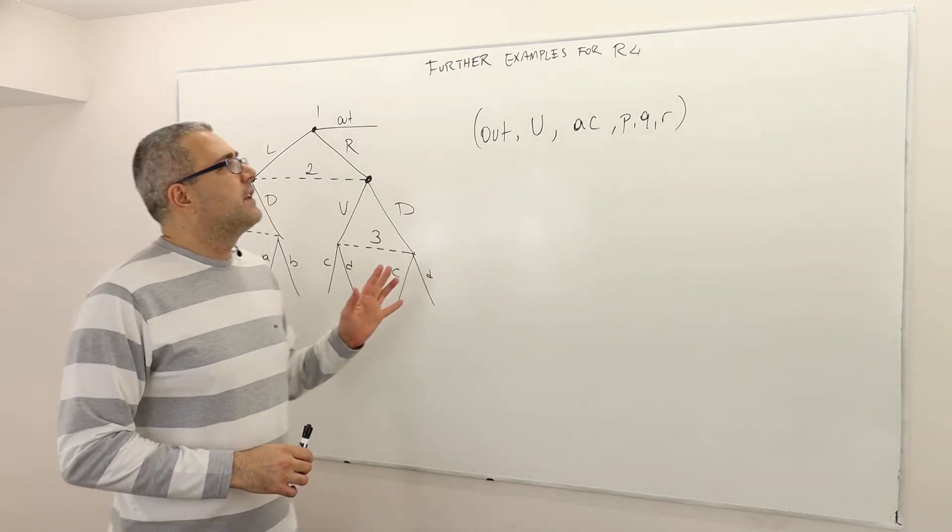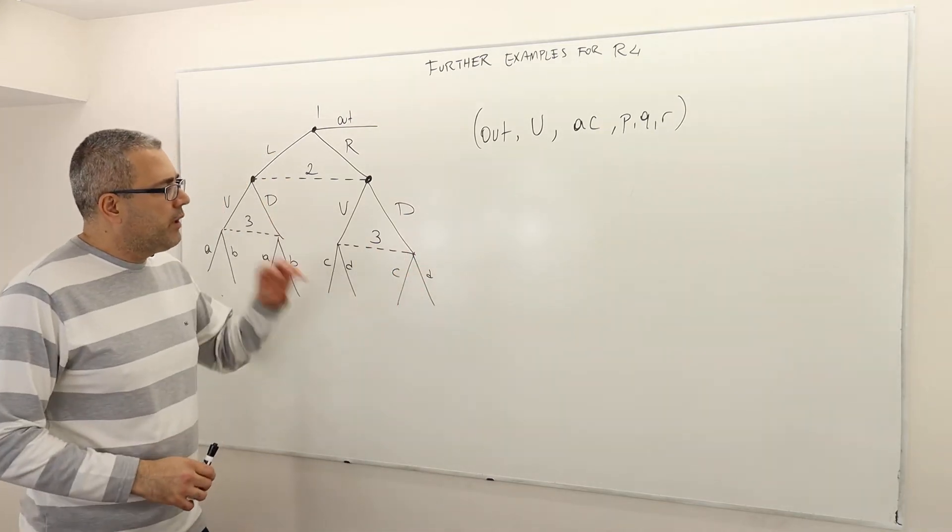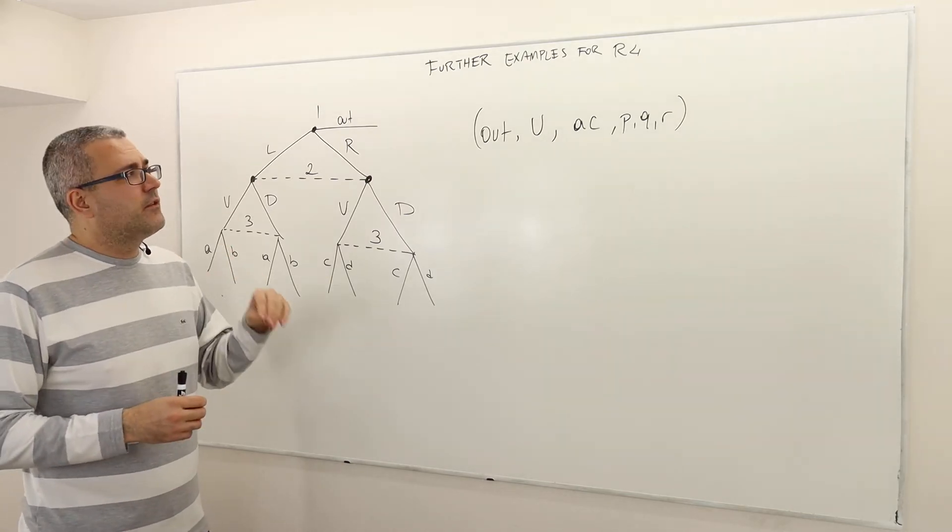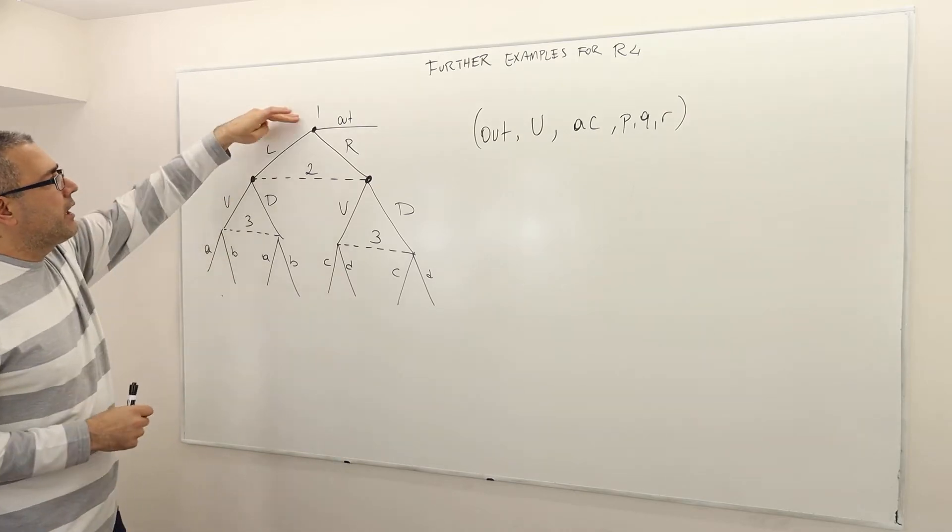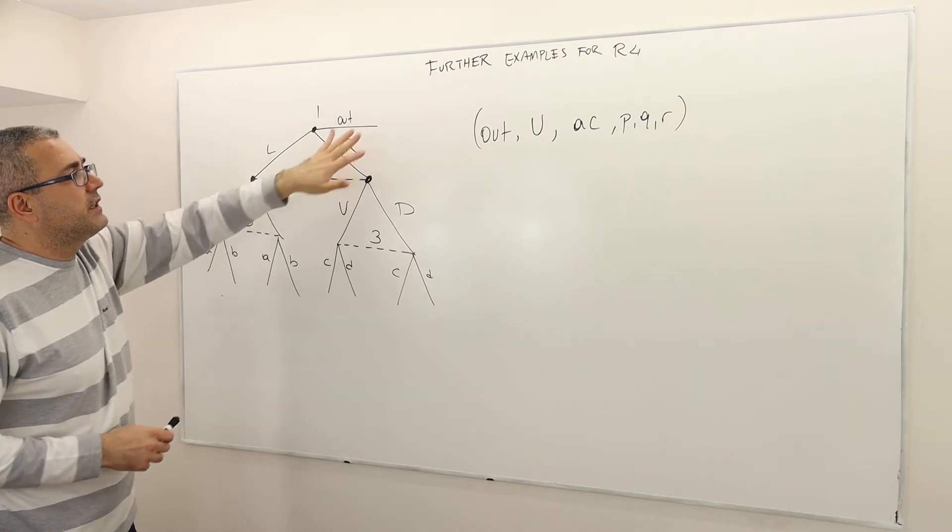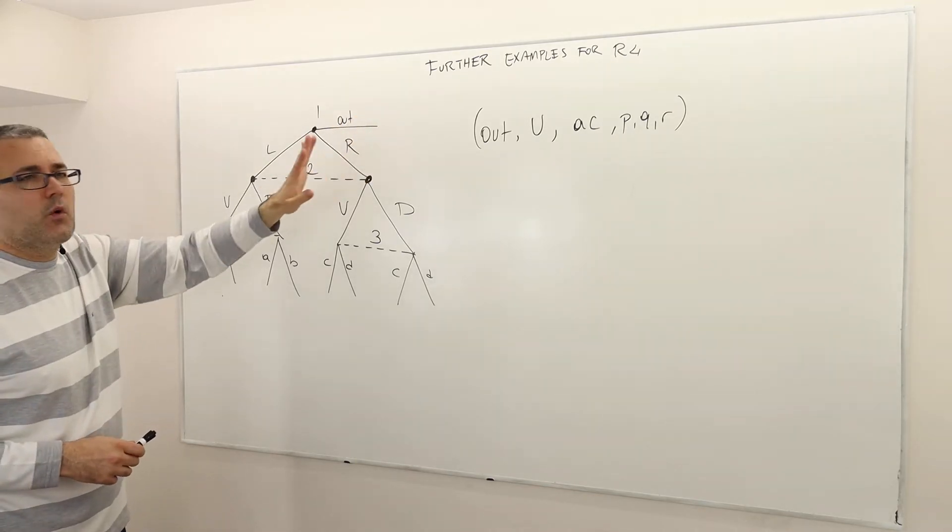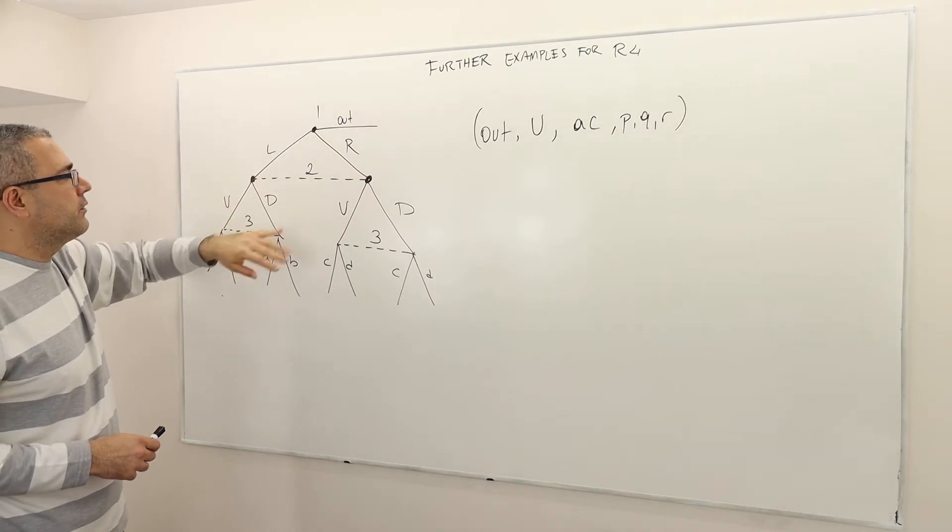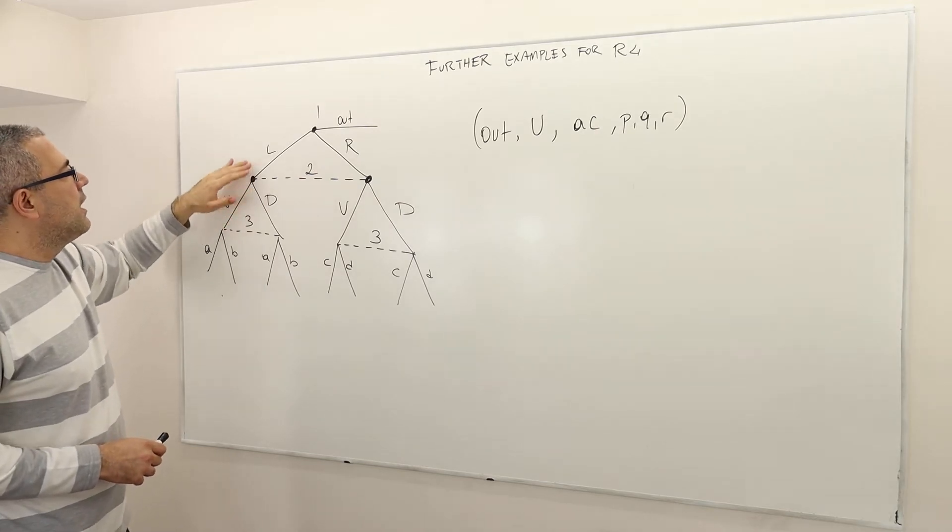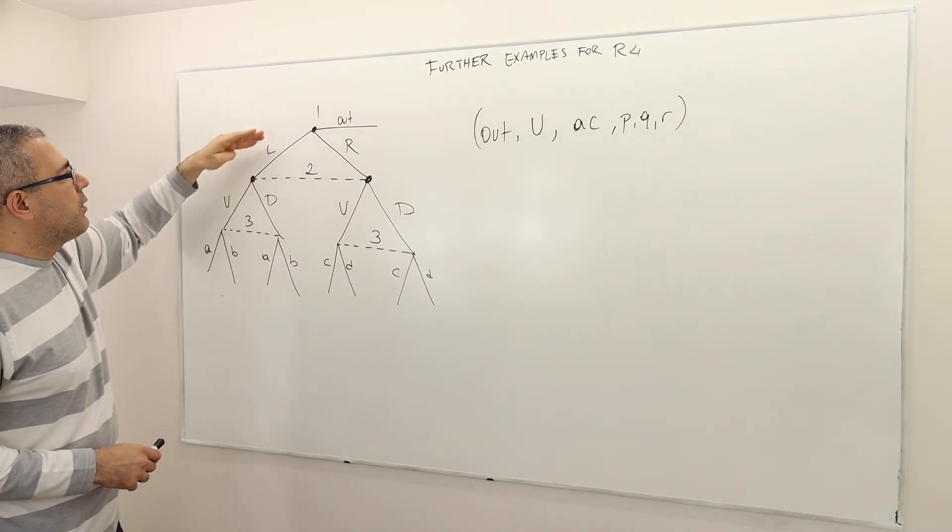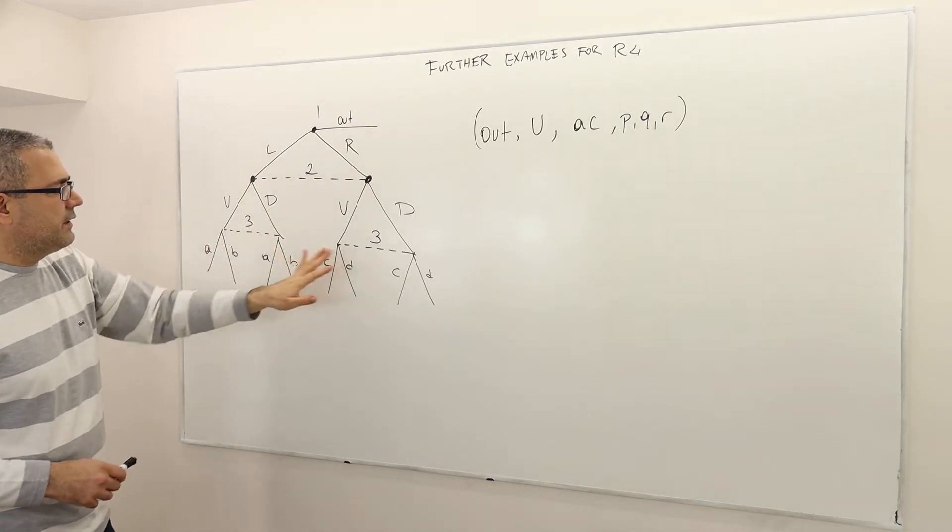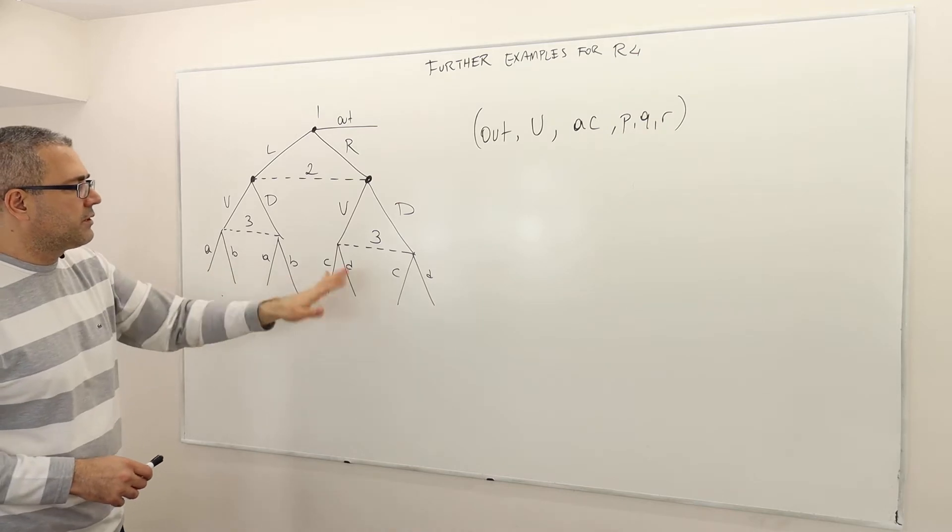This is another example where we want to understand the details of requirement 4. Player 1 moves, selects out or left or right. If he selects out, the game is over. This is the one that is going to take the information sets off the equilibrium path. However, if player 1 plays left or right, player 2 is going to choose U or D, and then player 3 is going to choose A, B, or C.